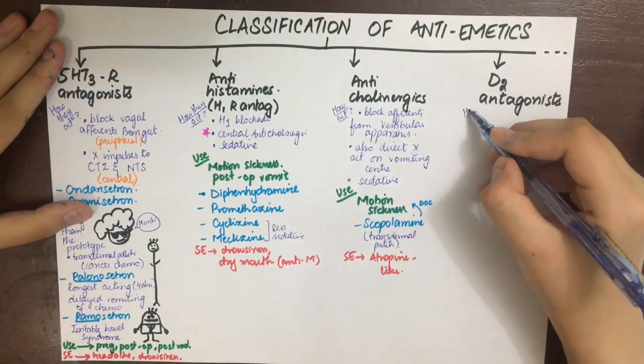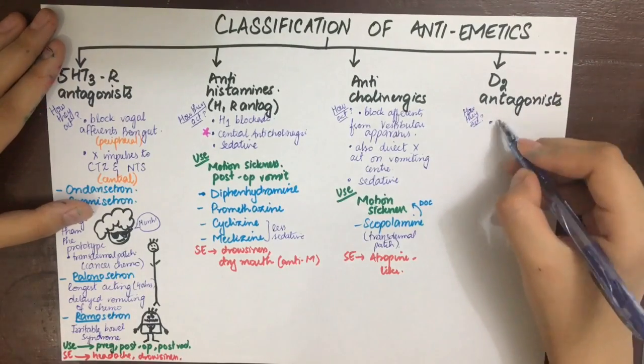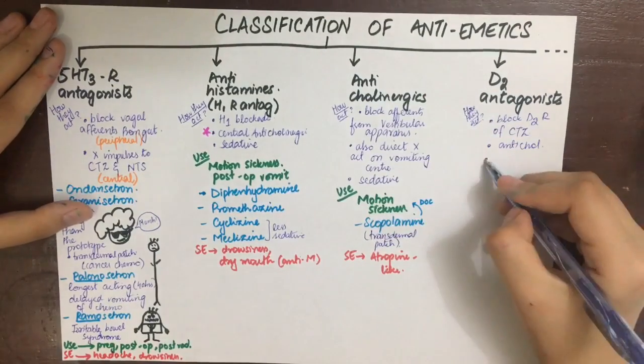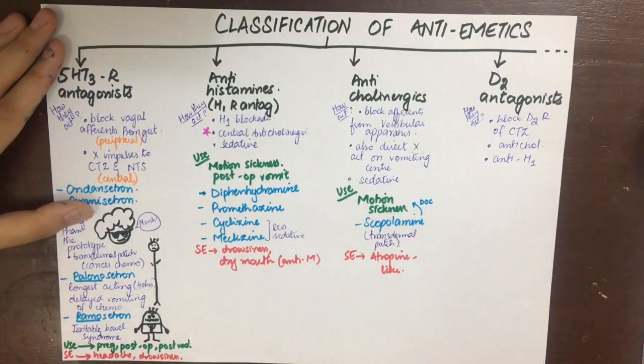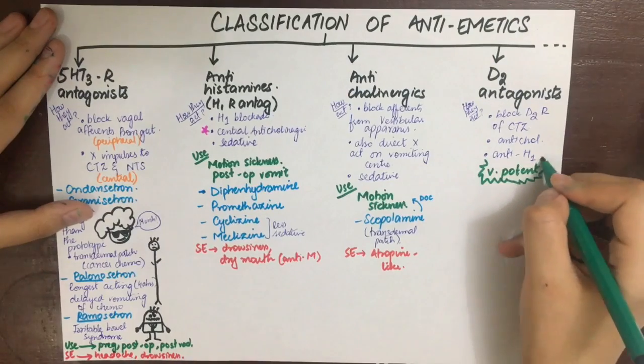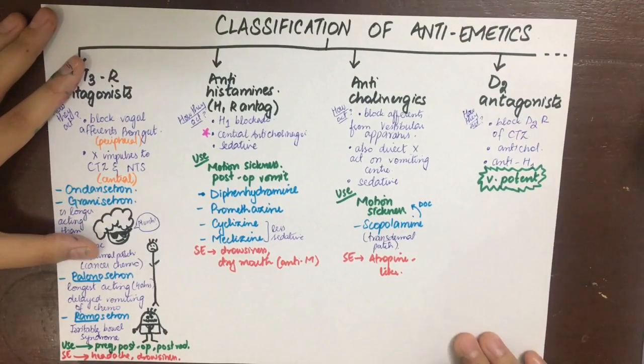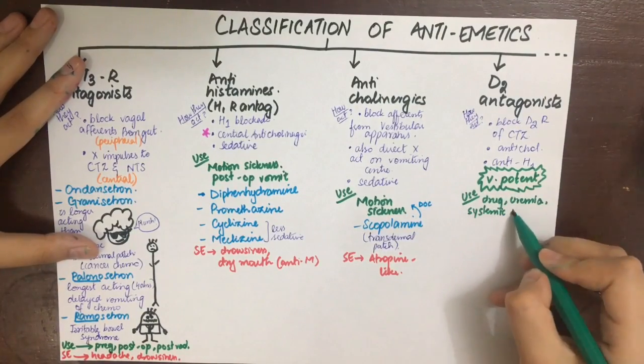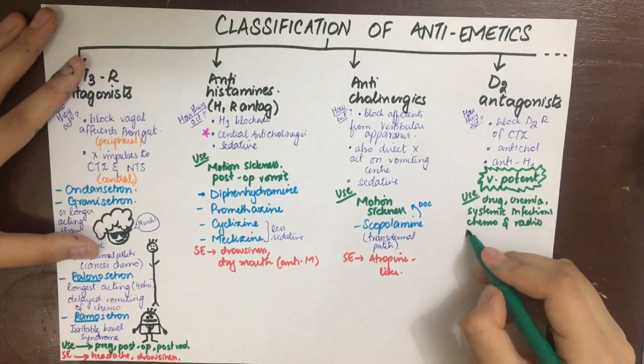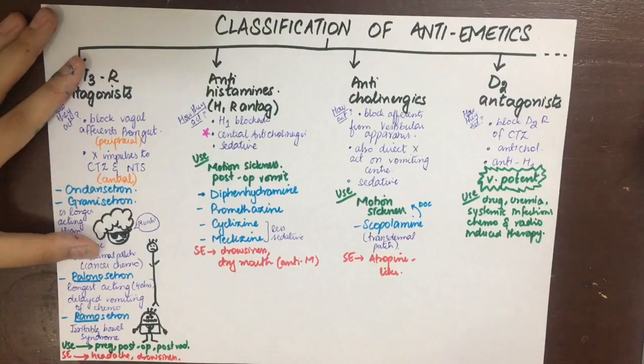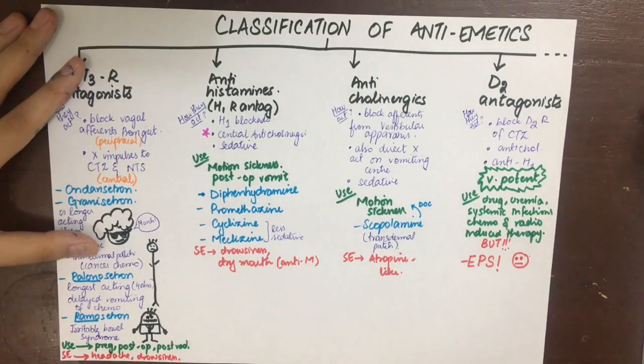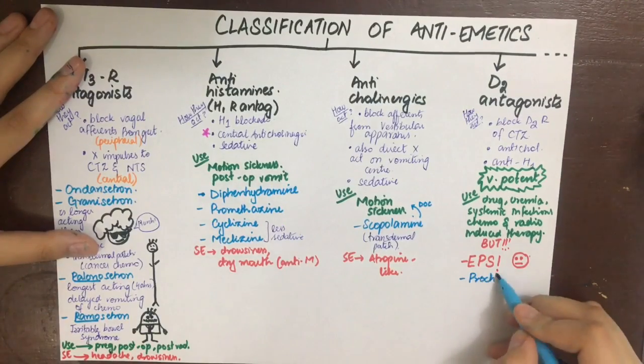Next, the D2 antagonists or antipsychotics or neuroleptics. They are very potent, but I'll tell you why we don't use them. They act by blocking the D2 receptors of the chemo trigger zone. They also have anticholinergic and antihistaminic properties. They are very potent but have a vast range of extrapyramidal symptoms like dystonias and tremors. They are mainly used in vomiting due to drugs, uremia, systemic infections, because all these things directly stimulate the chemo trigger zone. The chief drugs used are prochlorperazine, which is the most commonly used D2 antagonist antiemetic, and chlorpromazine.